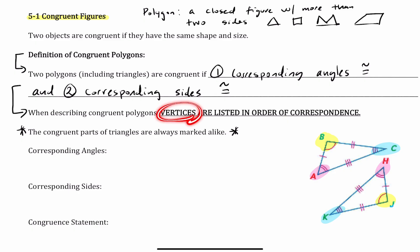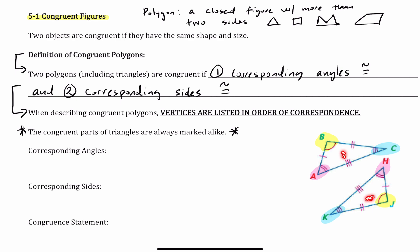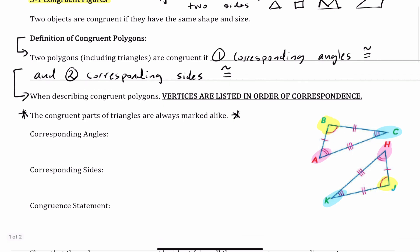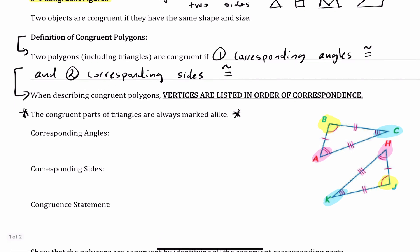The word vertices is plural for the word vertex. This is a vertex, this is a vertex, this is a vertex. If I have all three, vertices is just plural for vertex. The congruent parts of triangles — what we're looking at here — are always marked alike. We're going to determine the corresponding angles and the corresponding sides.